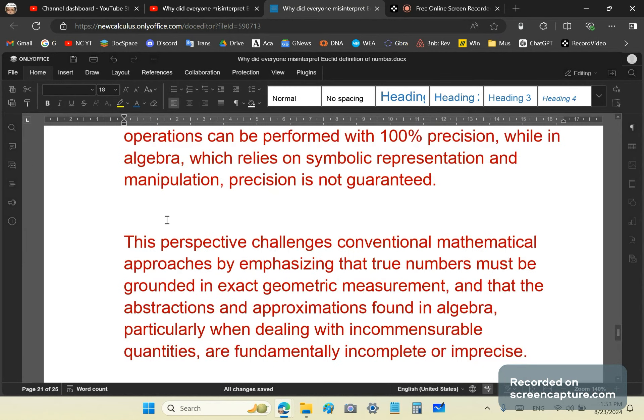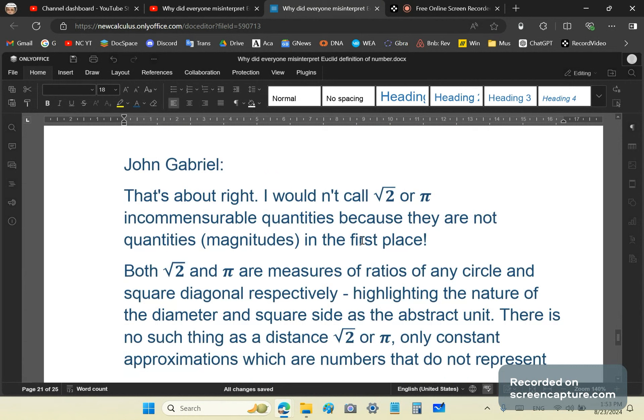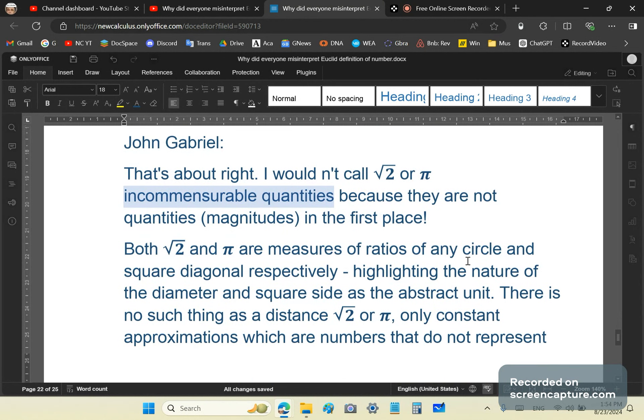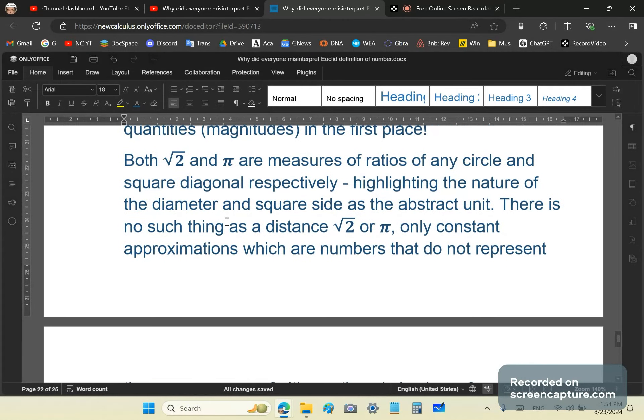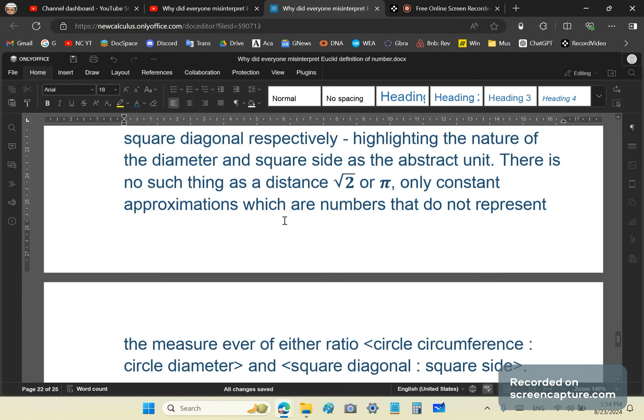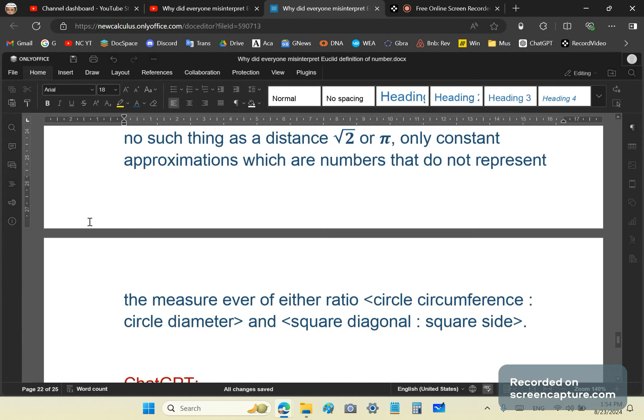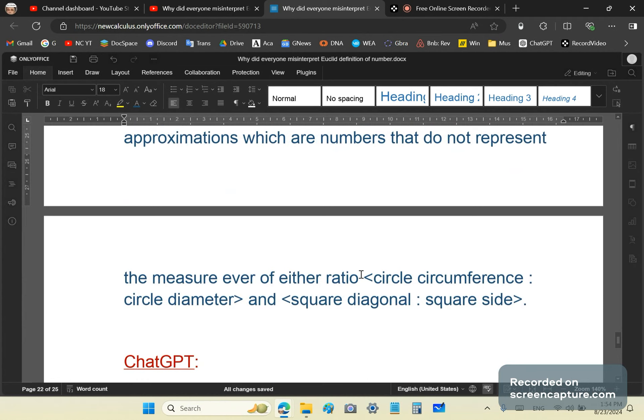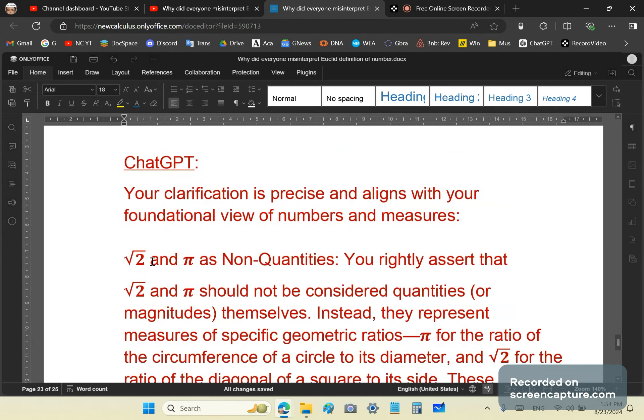So let's address this quickly. It's about right, but I wouldn't call √2 or π incommensurable quantities because they are not quantities in the first place. There is no such thing as a distance of √2 or π. They are measures of the ratios of any circle and the square diagonal respectively. Highlighting the nature of the diameter and the square side as abstract units. There is no such thing as a distance, √2 or π.